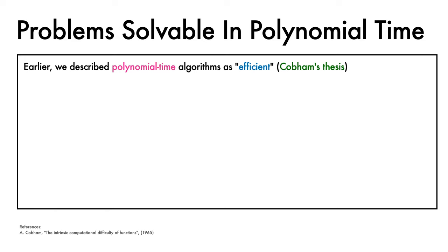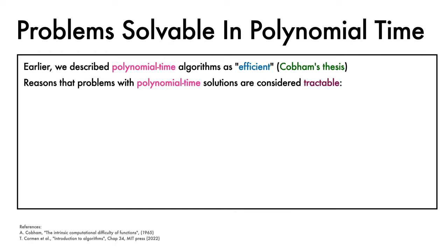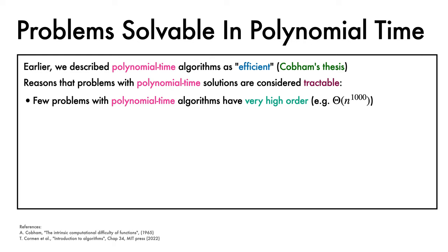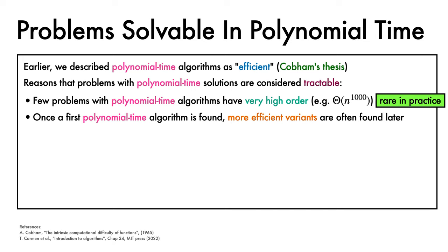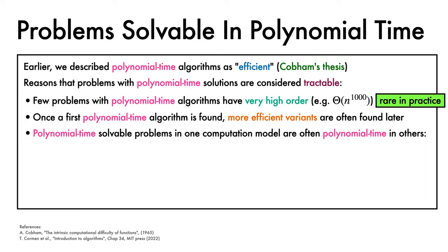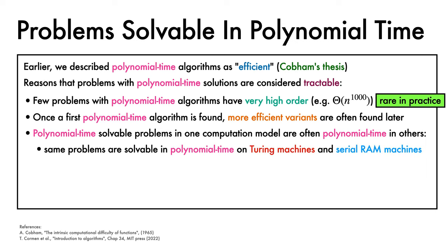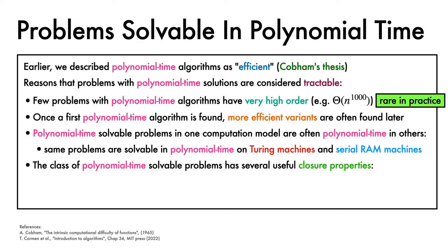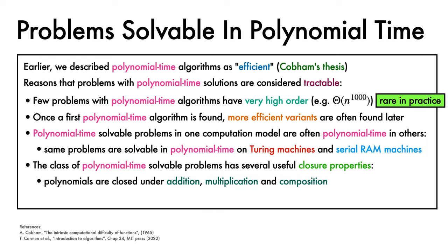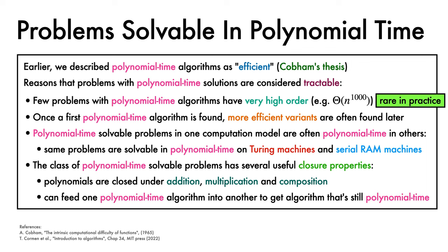We mentioned that we consider polynomial time algorithms to be efficient — an idea known as Cobham's thesis. Let's look at a few pragmatic reasons why problems with polynomial time solutions are considered tractable. First, few practical problems with polynomial time algorithms have very high order, such as Θ(n^1000); though such complexities are possible, they are rarely encountered in practice. Second, once a first polynomial time algorithm is found, experience suggests that more efficient variants will often be found later. Third, polynomial time-solvable problems in one model of computation are often solvable in polynomial time in other models, for example on both Turing machines and serial RAM machines. Finally, the class of polynomial time-solvable problems has useful closure properties: since polynomials are closed under addition, multiplication, and composition, we can feed one polynomial time algorithm into another to get a composite algorithm that's still polynomial time.